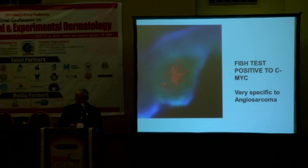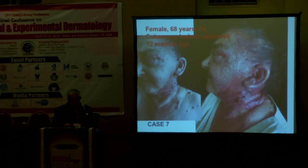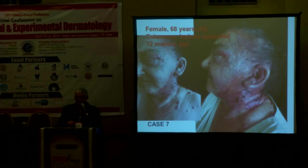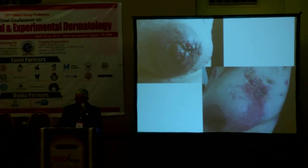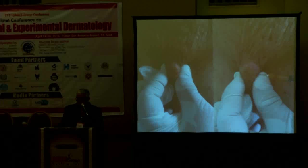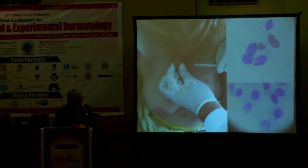Case number seven: a female, 68 years old, with a cutaneous lesion that appeared 12 months ago. She had many infiltrated plaques. I performed fine needle aspiration and found many atypical epithelioid cells suggesting metastatic breast carcinoma.